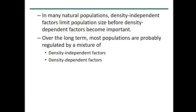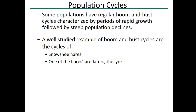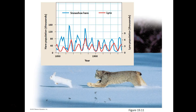Over very long periods, most populations are regulated by both density-independent and density-dependent factors. Some populations show regular cycles of increase and decrease — one of the best studied is snowshoe hares and lynx. Lynx are very dependent on snowshoe hares for food. When the hare population is very high, lynx cubs survive well and the lynx population increases. Then the many hungry lynx eat the hares, the hare population crashes, the lynx starve and decline, and with few predators, the hare population rebounds dramatically — returning to square one in a repeating cycle.